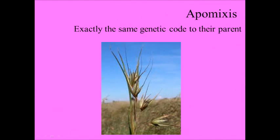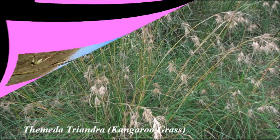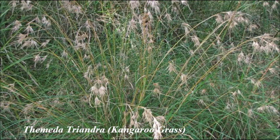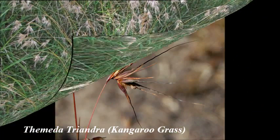Apomixis is where a new individual has exactly the same genetic code as their parent. In some plants like the Maitenus triandra, embryos inside the seeds can be produced.